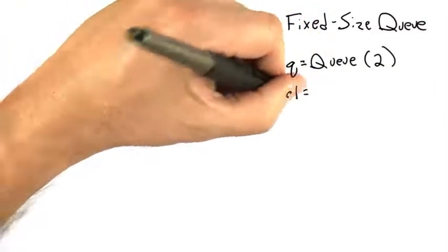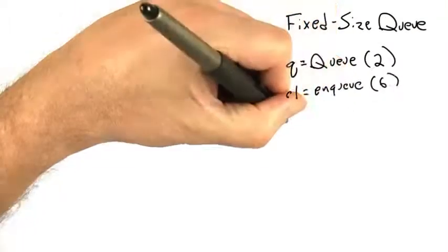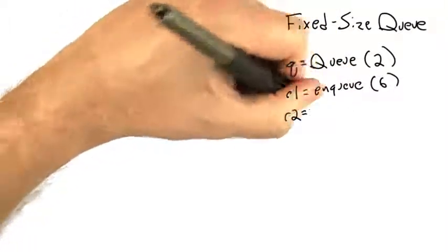I'm going to set temporary variable r1 to be the return value of enqueuing an element. I'm going to set r2 to be the return value of enqueuing another element.